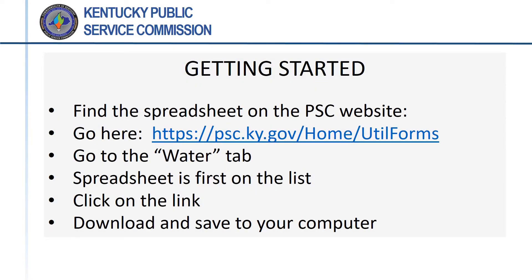To review: the Water Loss Calculation Form is available as an Excel spreadsheet on the PSC website at the Water tab on the Utility Forms page, which is under the Utility Information tab on the PSC homepage. Utilities should download and save the form. A new form should be downloaded each year to make sure that the latest version is being used.